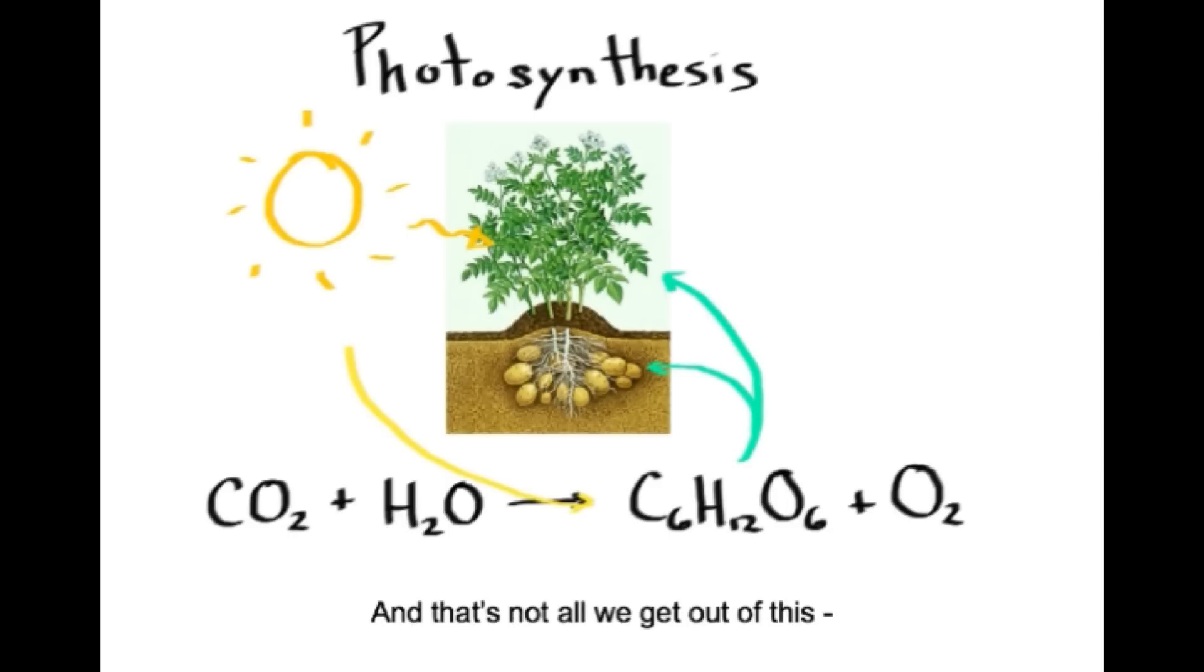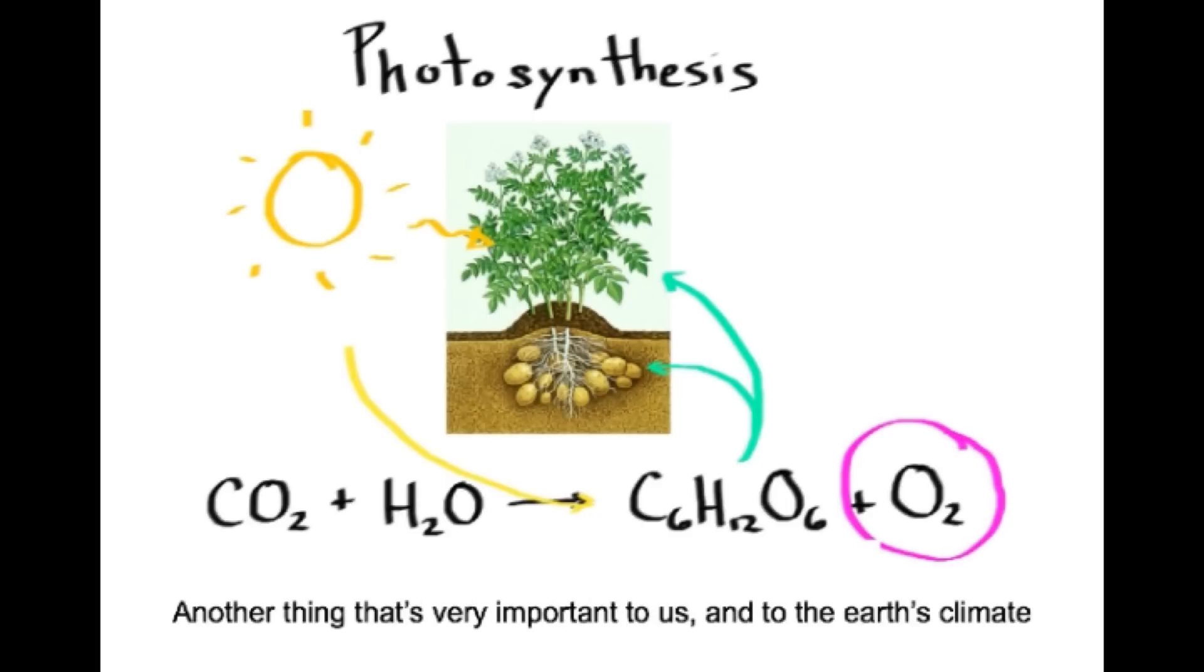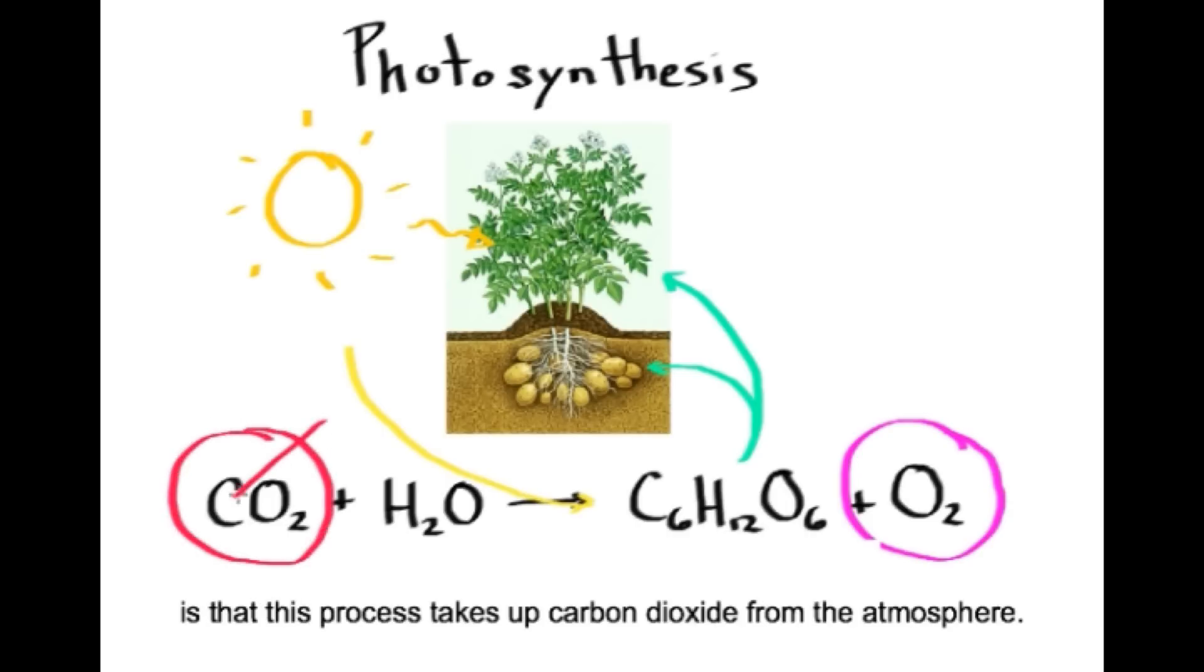And that's not all we get out of this. Another product of photosynthesis is oxygen, which is kind of important to us. Another thing that's very important to us, and to the Earth's climate, is that this process takes up carbon dioxide from the atmosphere. As we'll talk about in a minute, carbon dioxide is a greenhouse gas, and it's good to keep its levels low.